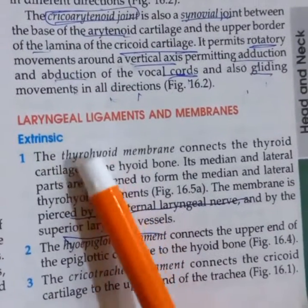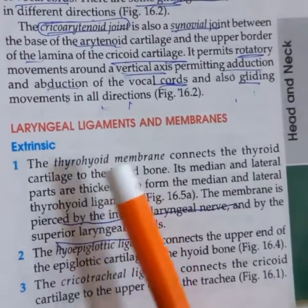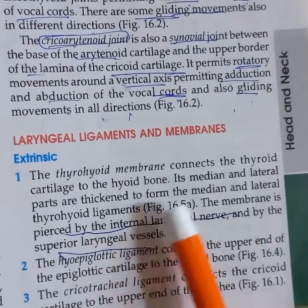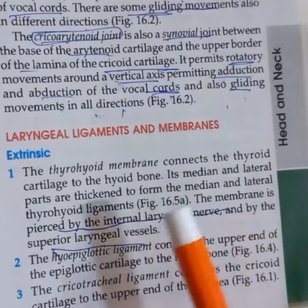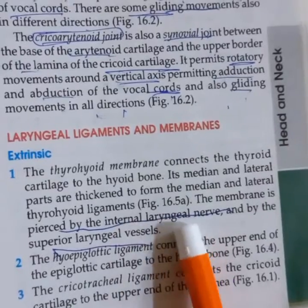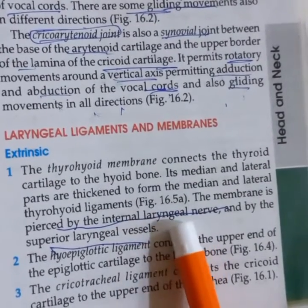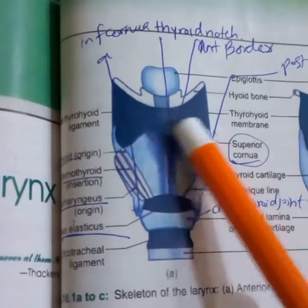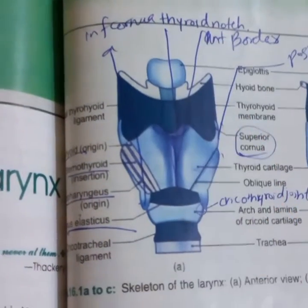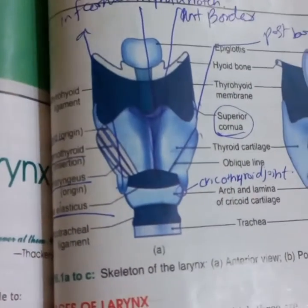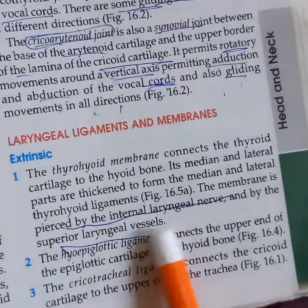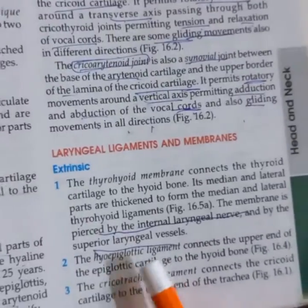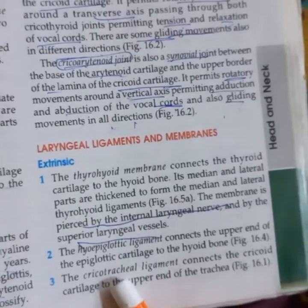The membranes and ligaments include the thyrohyoid membrane, which connects the thyroid cartilage to the hyoid bone. The lateral part is thickened to form the thyrohyoid ligament. Importantly, the internal laryngeal nerve and superior laryngeal vessels pierce through this membrane. There is also a medial thyrohyoid and lateral thyrohyoid portion, where the recurrent laryngeal nerve appears. The hyo-epiglottic ligament connects the hyoid bone and epiglottis, which connects further with the tracheal ring.